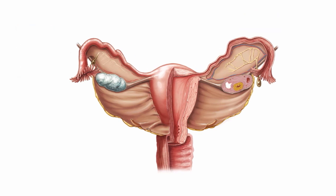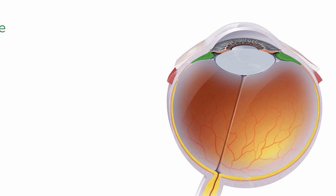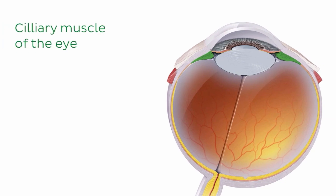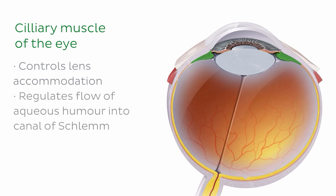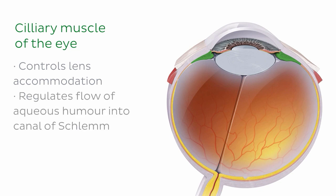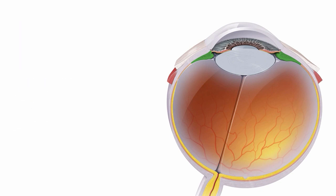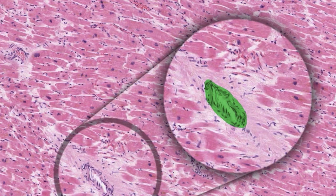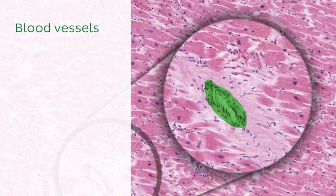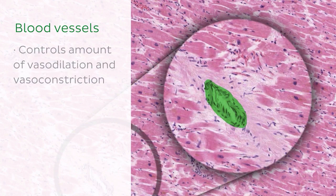We can also find a small ring of smooth muscle in the eye, known as the ciliary muscle. This controls lens accommodation when viewing objects at varying distances and also regulates the flow of aqueous humor into the canal of Schlemm. The final example of smooth muscle is that found in the blood vessels, where smooth muscle functions to regulate the caliber of the blood vessels by controlling the amount of vasodilation and vasoconstriction.